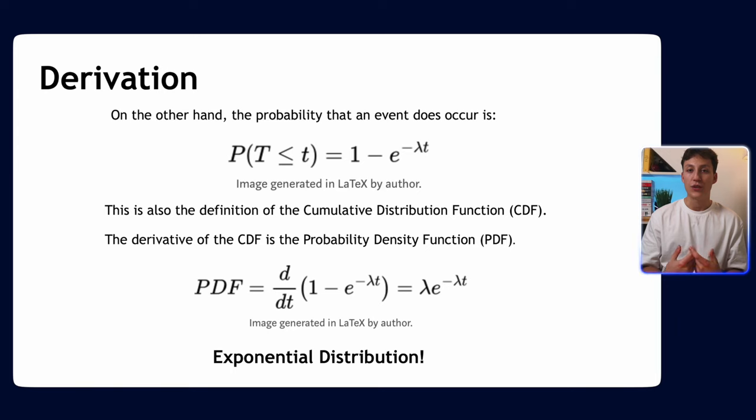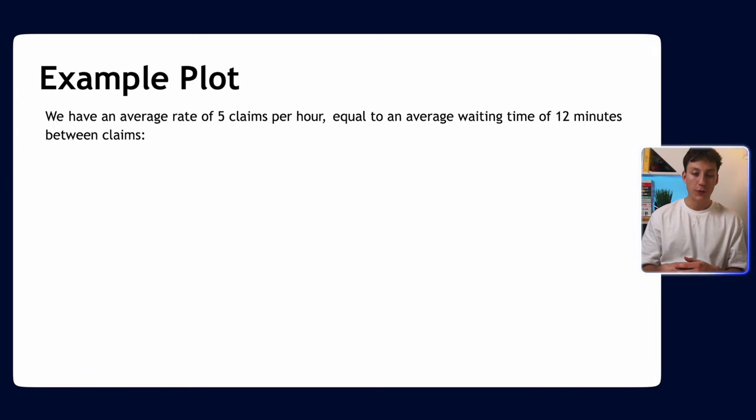Now we've derived the exponential distribution from scratch, let's show an example. Let's go back to our claims example. We have five claims per hour. This means that on average we have to wait 12 minutes for the next claim, right? Because we have 60 divided by five.